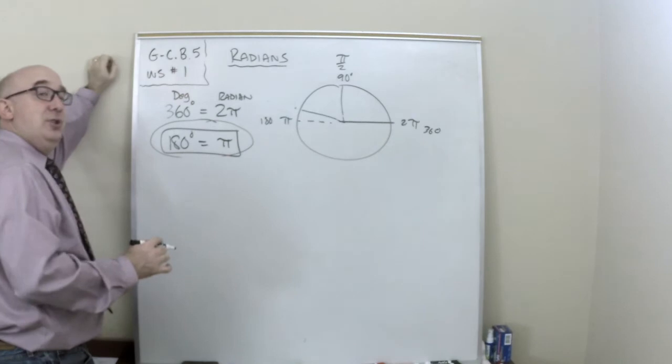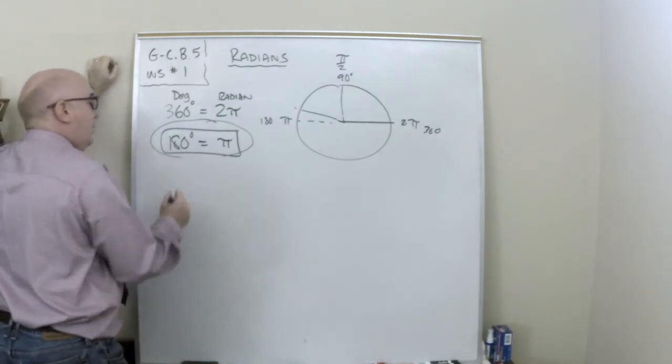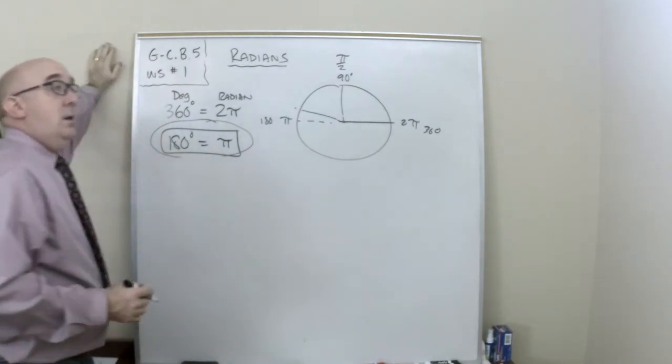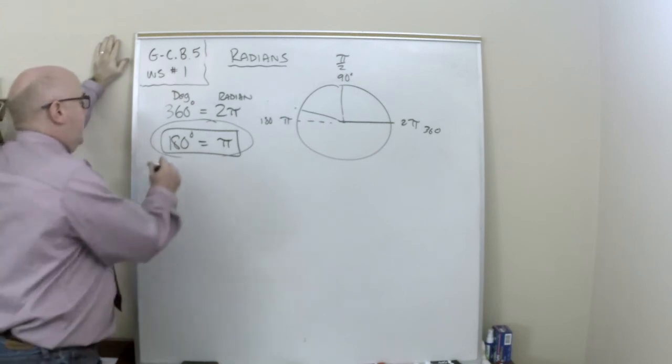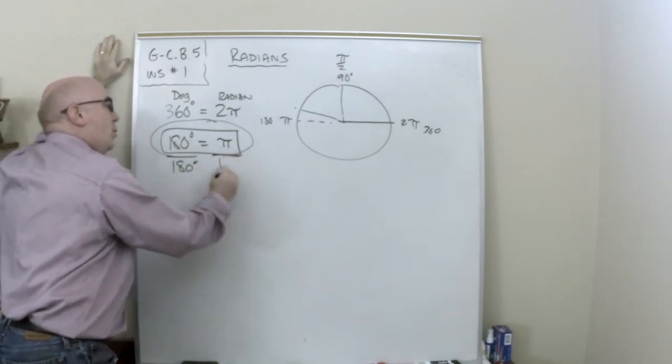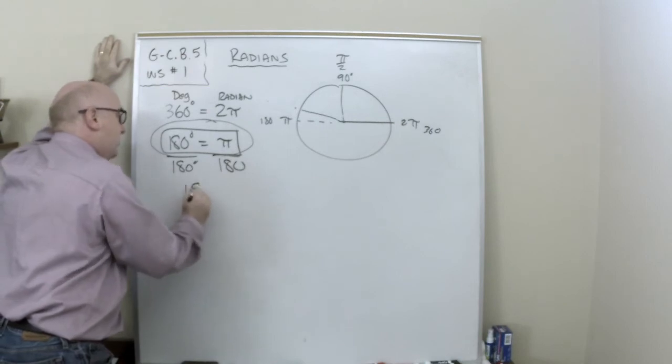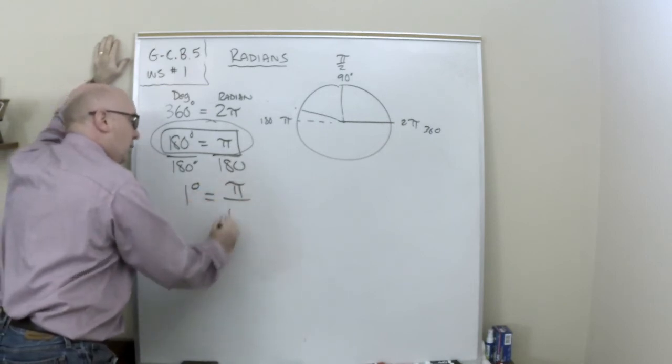If I want to convert to degrees, I want to know what, or if I want to convert, what I'm going to do is I'm going to divide both sides by 180 and I get one degree equals pi over 180.